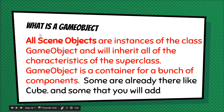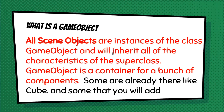What is a game object? All scene objects are instances of the class GameObject. Therefore, they inherit all the characteristics of the superclass called GameObject — they're going to have methods and characteristics they all share, like a Cube.